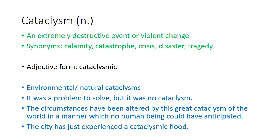Cataclysm — it's a noun meaning an extremely destructive event or violent change. Synonyms: calamity, catastrophe, crisis, disaster, tragedy. The adjective form of cataclysm is cataclysmic. Examples: Number one, environmental and natural cataclysms. Number two, it was a problem to solve, but it was no cataclysm. Number three, the circumstances have been altered by this great cataclysm of the world in a manner which no human being could have anticipated. Number four, this city has just experienced a cataclysmic flood.